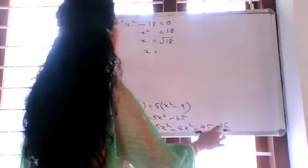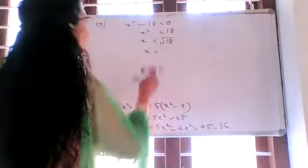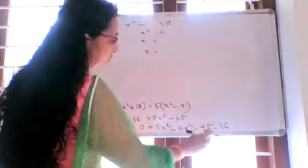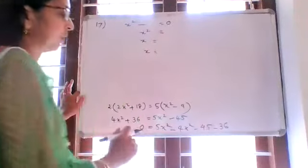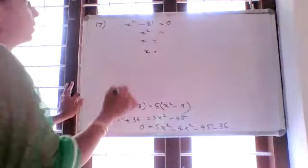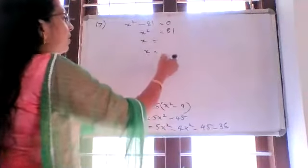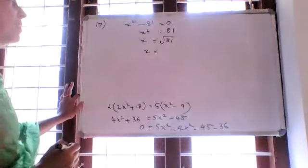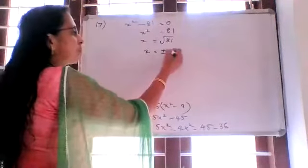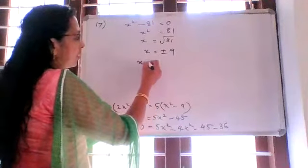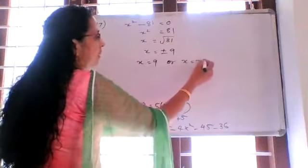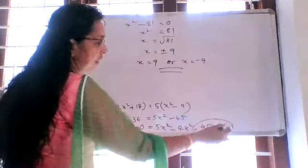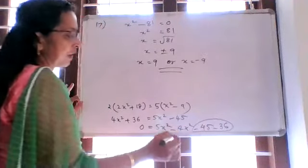Negative 45 minus 36: two signs are negative, add and put a negative sign, giving 81. So x squared equals 81. Then x equals root of 81, which is plus or minus 9. Therefore x equals positive 9 or x equals negative 9.